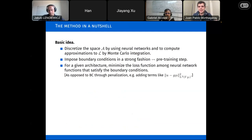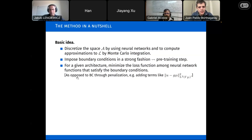This is a machine learning seminar — so where does machine learning enter? The idea is to consider some discretization of the admissible class A by using neural networks, and then to compute this least squares loss function by Monte Carlo integration. A natural way to impose boundary conditions could be to add some penalization terms — for example, adding an L2 discrepancy on the boundary. I will not do so; I would rather impose boundary conditions strongly. This requires an extra step in my formulation.